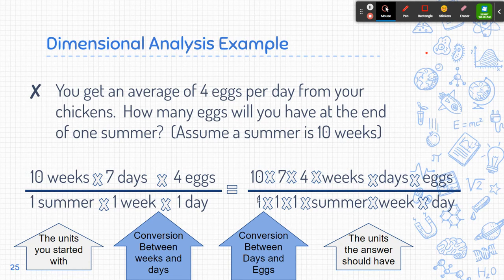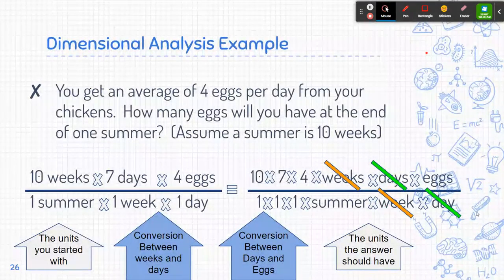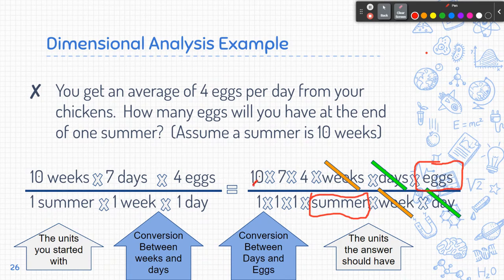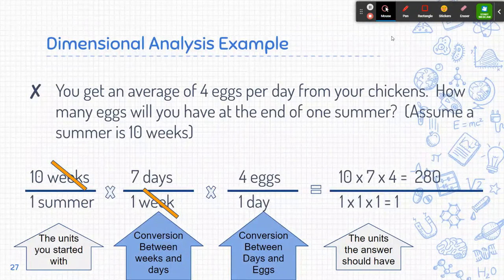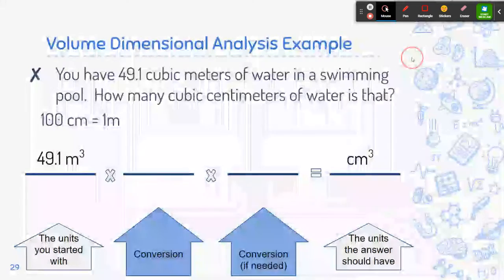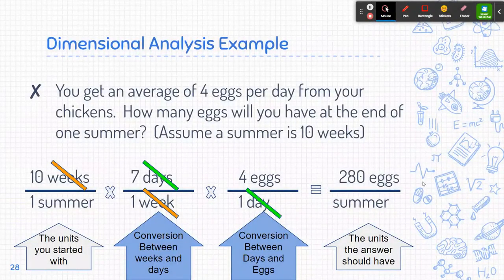I'm putting all the numbers together and all the units together at once. On top I have ten times seven times four, and on the bottom I have one times one times one, which is just one. My weeks on top and week on bottom cancel out, and my days on top and day on the bottom also cancel out — you don't have to worry about plural versus singular, they're the same thing. I'm left with eggs on top and summer on the bottom. I can cancel out the weeks and days as I go along. Either way it's exactly the same, and when I multiply ten times seven times four, I get 280 eggs per summer.